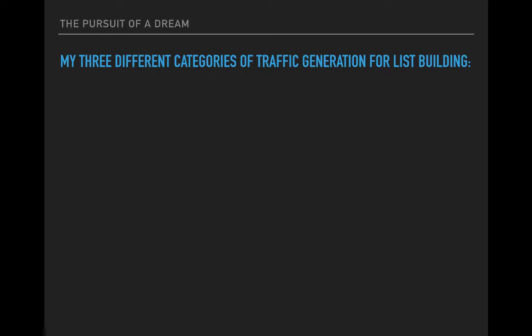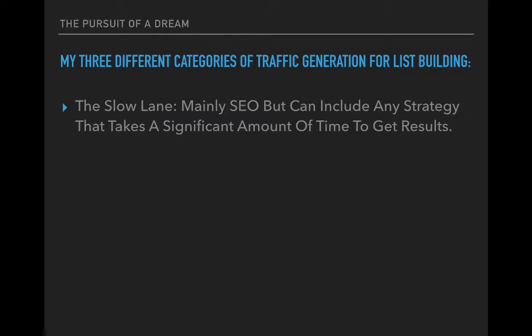In my opinion there are three different categories of traffic generation strategies for list building. The first one is the slow lane, which is mainly SEO, but can include any strategy that takes a significant amount of time to get results. Think of things like SEO, blog post commenting — anything that just takes a long time and isn't really worth it in my opinion.